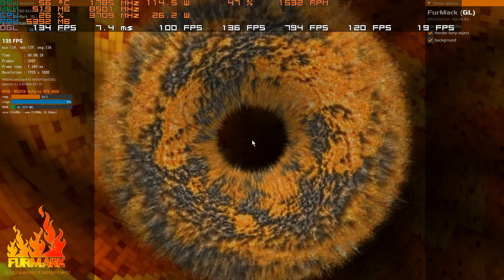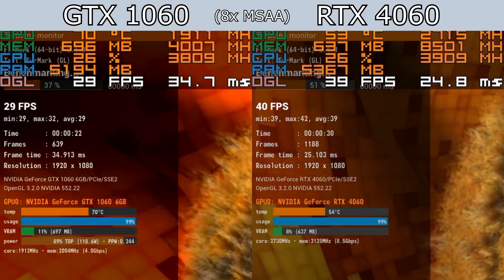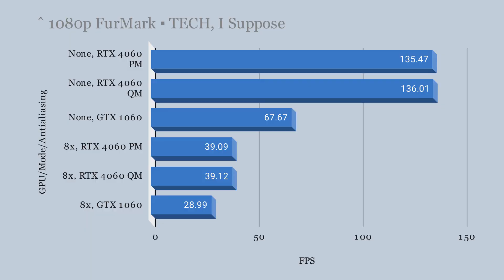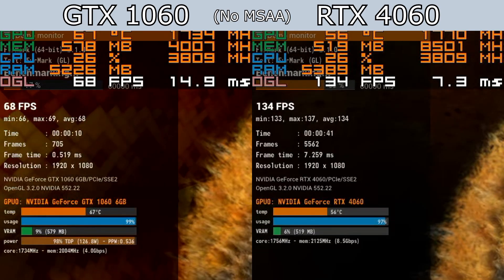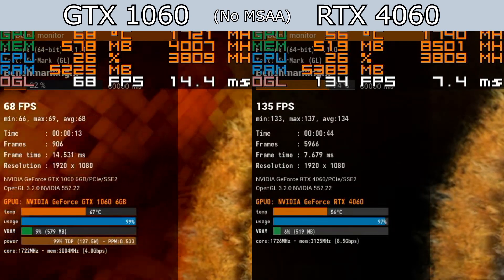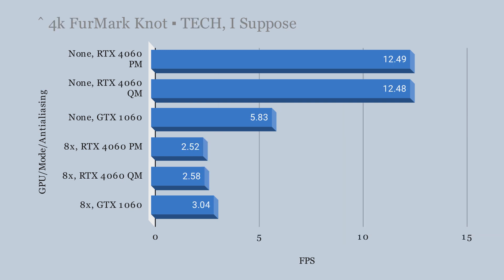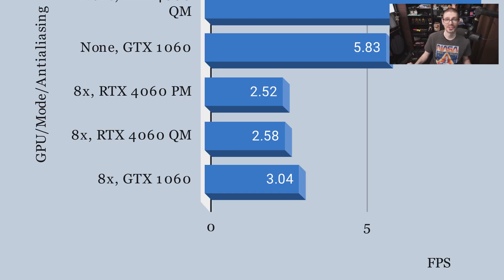The Furmark benchmark really pushes the GPUs — tested with no anti-aliasing and 8x anti-aliasing at both 1080p and 4K. There's also the NOT benchmark, a subset. At 1080p the 4060 is faster, and the same at 4K. However, in the NOT benchmark at 4K with anti-aliasing, the GTX 1060 is actually slightly faster than the 4060 — though this could be within margin of error given the very low frame rates involved.